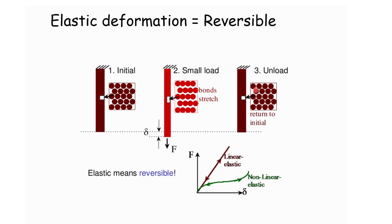When the load is removed, the material goes back to its original position, indicating its ability to bounce back — a key characteristic of elastic material. Elastic deformation is reversible; elastic means reversible. At the bottom, the force versus deformation graph shows that initially force and stretch are directly proportional. The relationship becomes non-linear when returning to its original position, but we still consider this elastic — the first being linear elastic and the green curve representing non-linear elastic behavior.